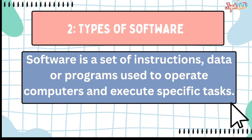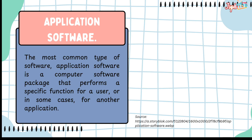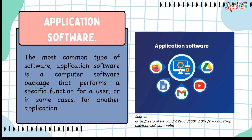Next, the types of software. Software is a set of instructions, data, or programs used to operate computers and execute specific tasks. First, we have application software — the most common type. Application software is a computer software package that performs specific functions for a user. Examples include Google Drive, YouTube, Gmail, Google Docs, and Microsoft Office.